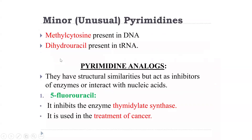There are also unusual bases: methylcytosine is found in DNA, while dihydrouracil is found in transfer RNA (tRNA). There are different types of RNA: tRNA (transfer RNA), mRNA (messenger RNA), rRNA (ribosomal RNA), small nuclear RNA, and RNA interference.